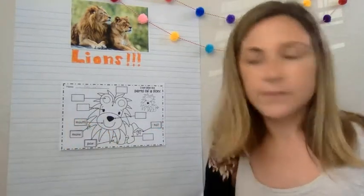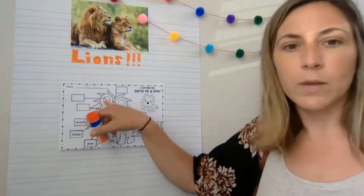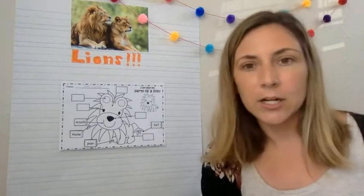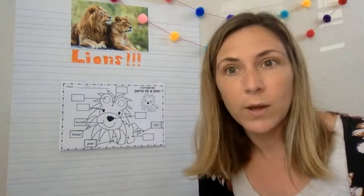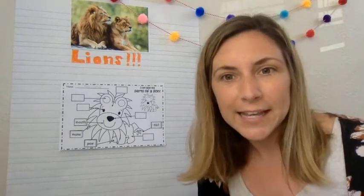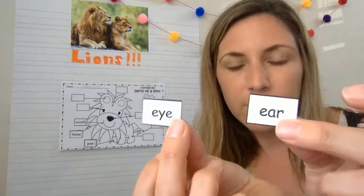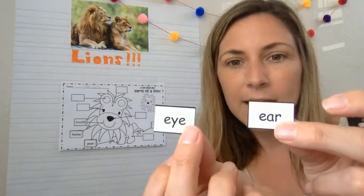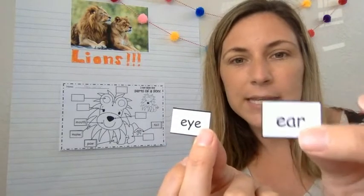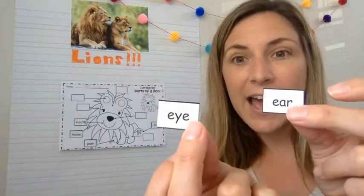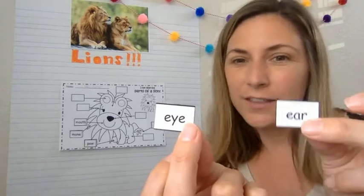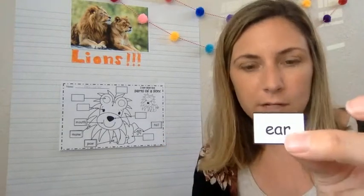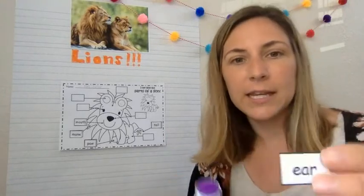All right what else do we have to label? That's a tricky one, ear. I see two that start with what letter? E right, ear which one is it? Yeah it's this one, this one is ear and this one is I. That's tricky because it's not the letter I, so ear and I. So let's put ear first E-A-R ear.